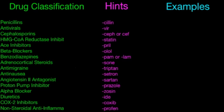-Tryptin is going to be your antimigraine. -Cetron is going to be your antinausea. -Sartan is going to be your angiotensin-2 antagonist. -Prezole is your proton pump inhibitor. -Zosin is your alpha blocker. -Ide is your diuretics. COX-2 inhibitors end in -coxib. -Adprofen is going to be your non-steroidal anti-inflammatory.